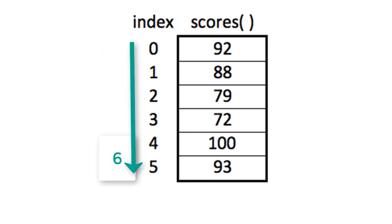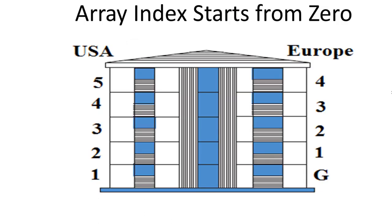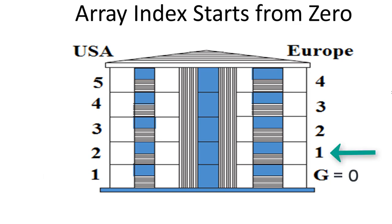The first index value of an array is zero. In this example, there are six elements in the array and the index values go from zero to five. It is most common to start counting from zero because the first index position starts with zero. This may be confusing for most Americans who count the ground floor as the first floor, but the rest of the world counts the first floor as the floor above ground.